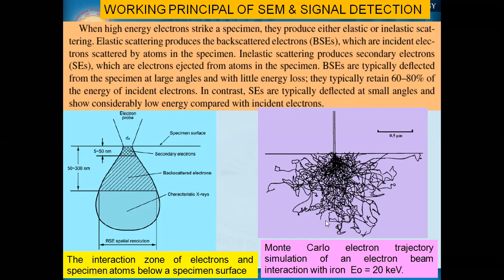This is a diagrammatic Monte Carlo electron trajectory simulation of an iron sample with a voltage of 20 kilo-electron volts. You can see that when we are hitting the specimen, the beam can penetrate deep. We get small-angle deflection with low energy, and high-angle deflection with high energy — two specific angles and two specific energies of electrons, which are important for our discussion.